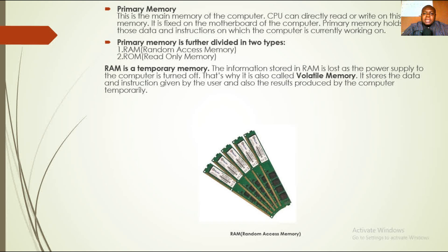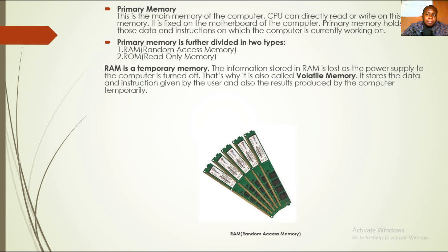Primary memory is further divided into two types: RAM (Random Access Memory) and ROM (Read Only Memory). RAM is a temporary memory — the information stored in RAM is lost as the power supply to the computer is turned off. That's why it is also called volatile memory.